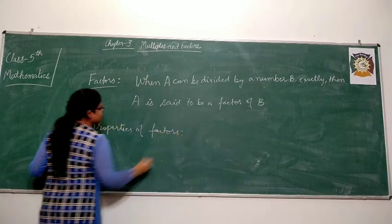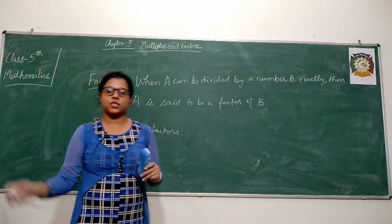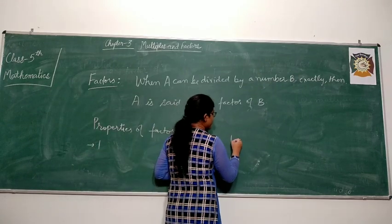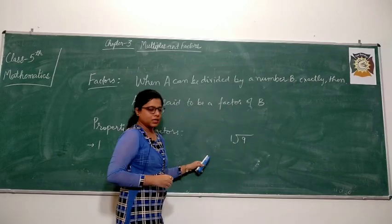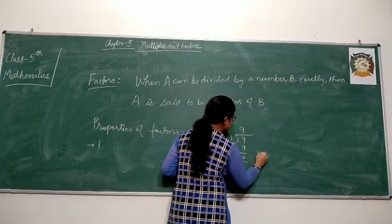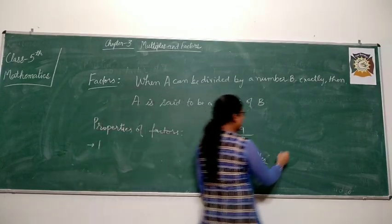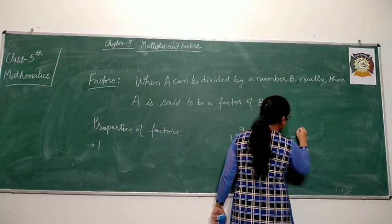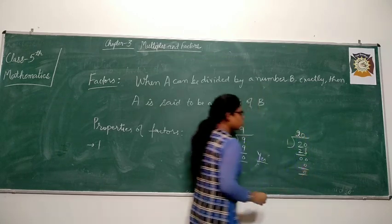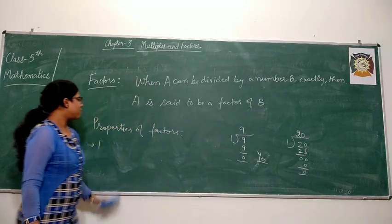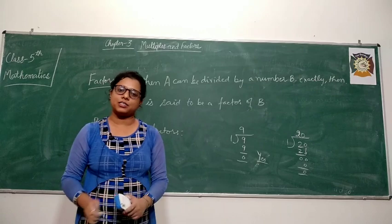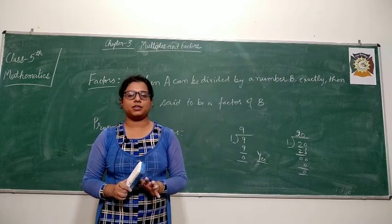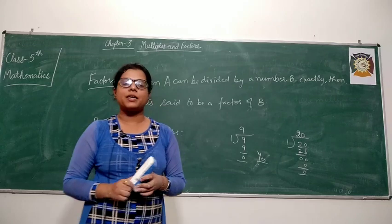Let me tell you some properties of factors. First: one is a factor of all numbers. If you check whether 1 is a factor of 9, you get 9 divided by 1 — yes, 1 is a factor of 9. You can check it for any number. Is 1 a factor of 20? Yes, here also 1 is a factor of 20. So one is a factor of all the numbers, and one is always the smallest factor of all numbers. All other factors will be greater than one.